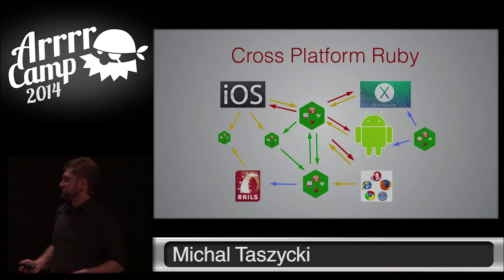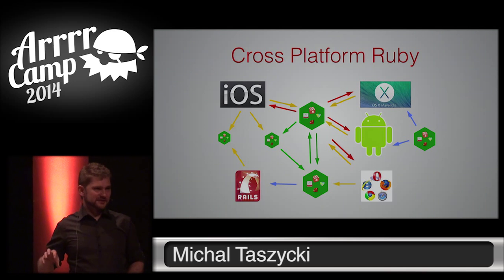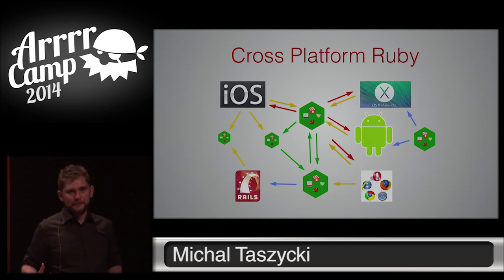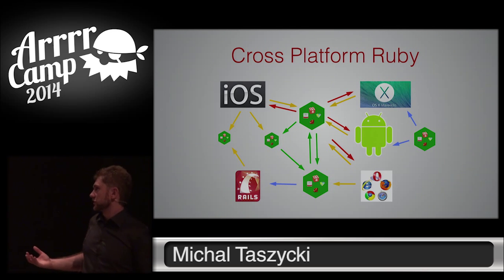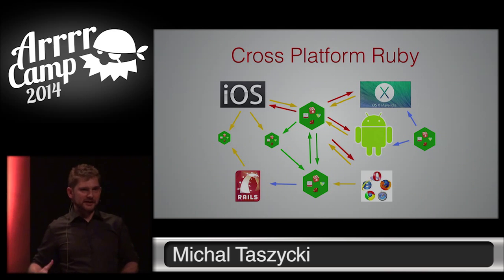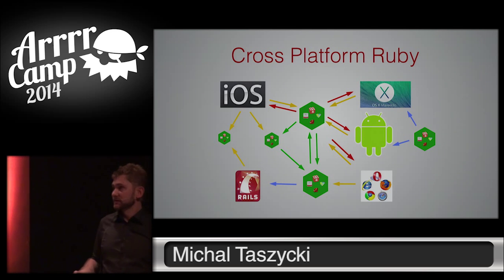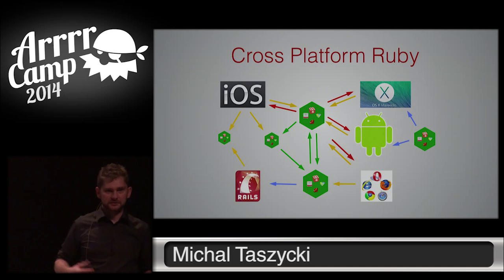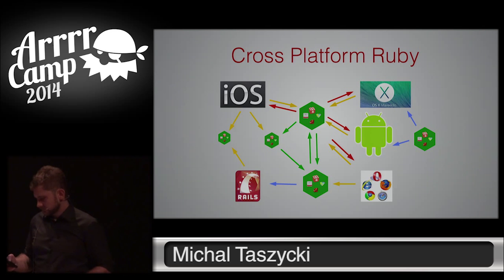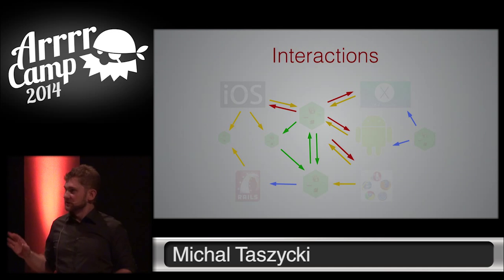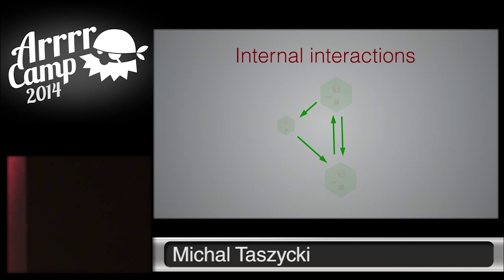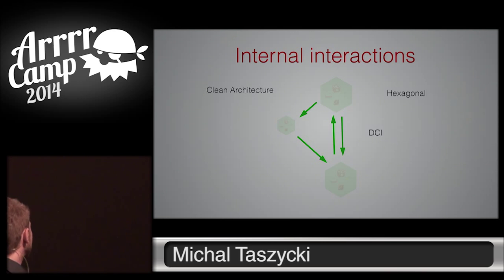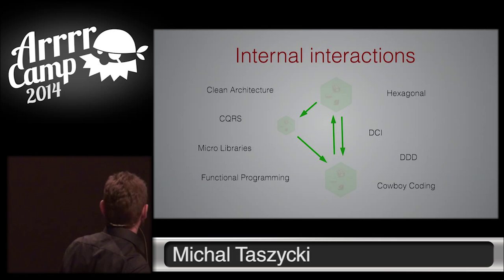So it actually looks like this. The idea is to have a small subset of functionalities. For example, let's say we want to save something — we need to save it in iOS, save our models in Android or in the browser. We can extract the saving functionality to some pattern like repository, implement it in plain Ruby, add interfaces to that on different platforms, and use it. The most interesting thing about that are the interactions between all of those systems. The first and easiest are the internal interactions — how do we implement communication between the cross-platform Ruby components? There are different ideas: clean architecture, hexagonal, DCI, DDD, cowboy coding — why not? This is your dreamland. This is plain Ruby, no database, no GUI. You can do whatever you want there. Tests are fast in this domain, and it works great.